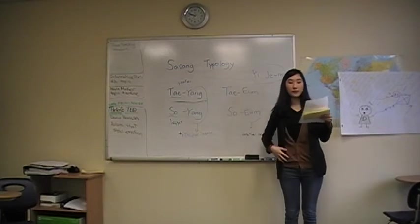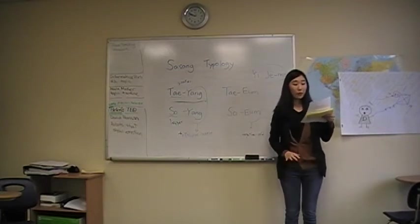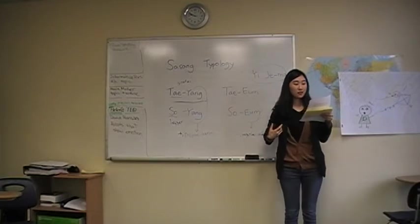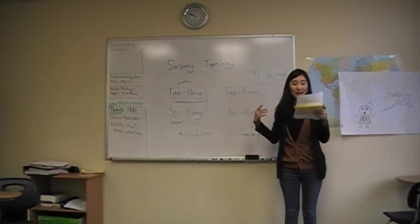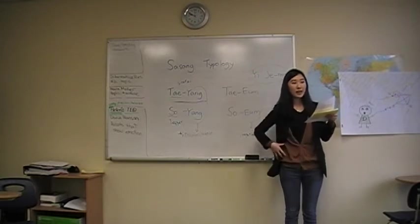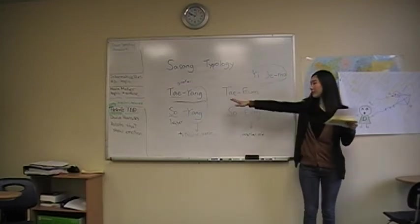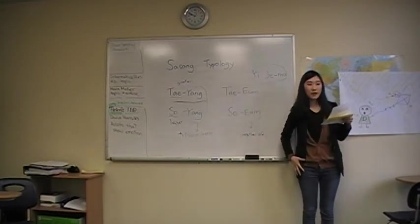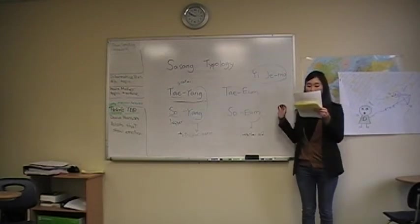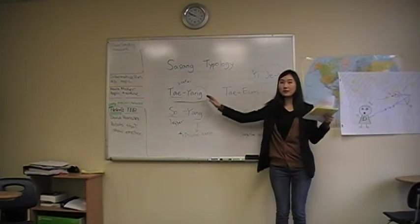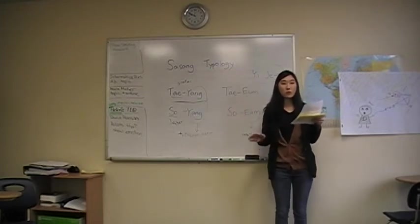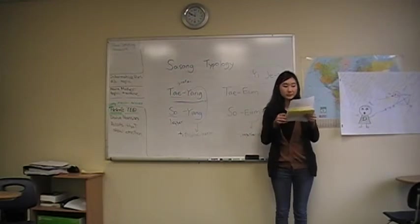So they have strong lungs, so their chest and head, these parts, are developed, and they have weak liver, so they have weakened and narrow waist and lower back. But opposite to Taeyang, Taeyang has strong functions of liver, and weak functions of lungs, so it's opposite. Yeah, because they don't have strong waist and strong legs, so they can't sit down and walk for a long time. They feel easily exhausted. Yes.